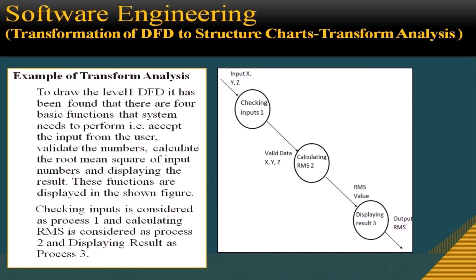In the next step, the main module of the zero-level DFD is decomposed into sub-processes to draw the level 1 DFD. It has been found that there are four basic functions the system needs to perform: accept input from the user, validate the numbers, calculate the root mean square of the input numbers, and display the result. In the figure, checking input is process 1, calculating RMS is process 2, and displaying result is process 3.